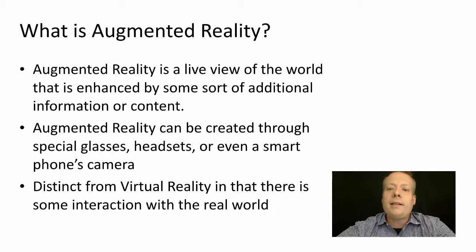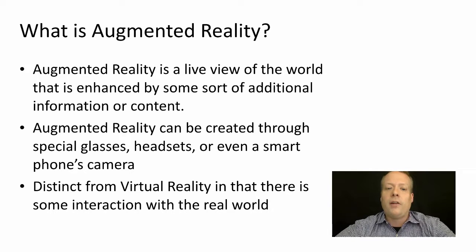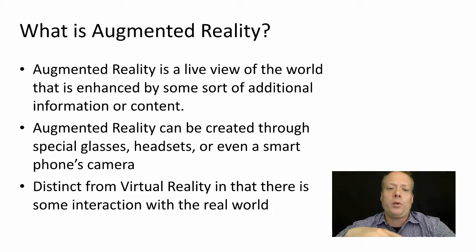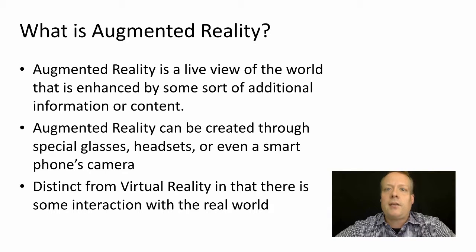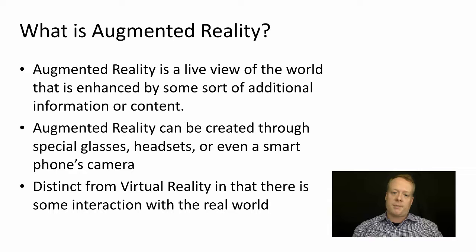What is augmented reality? Augmented reality is a live view of the world that is enhanced by some sort of additional information or content from a virtual presence. It's usually done through a set of special glasses or some sort of headset. We usually think of it as visual, but it could be audio as well, or even tactile. In a lot of cases it's even done just using a very simple device like a smartphone camera. Augmented reality is also distinct from virtual reality in that virtual reality totally contains the user within a virtual space, whereas augmented reality emphasizes the intersection of the real world and the virtual world.